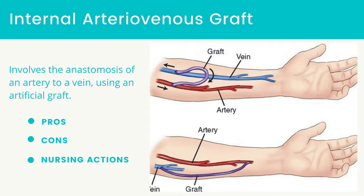Mini-quiz: What are the four most important abnormal assessments that must be reported to the provider? The four most important abnormal assessments are signs of clotting, infection, arterial steal syndrome, and absent bruit sound.